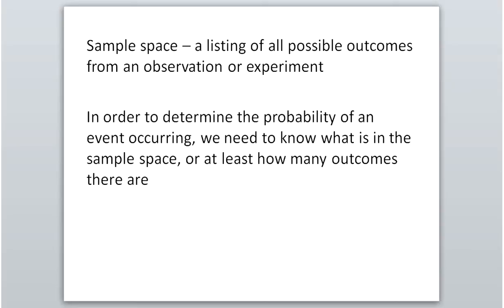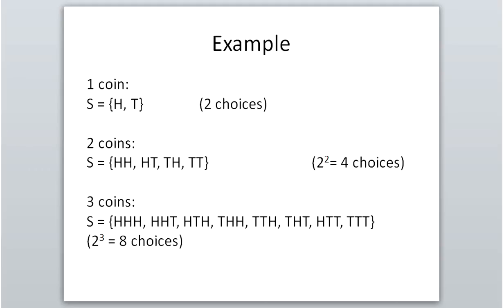When calculating probabilities, one of the first things we do is figure out the sample space — a listing of all possible outcomes. Sometimes we just need to know the number of things that could happen. For example, if you toss one coin, you can either get heads or tails, so there are two items in the sample space.